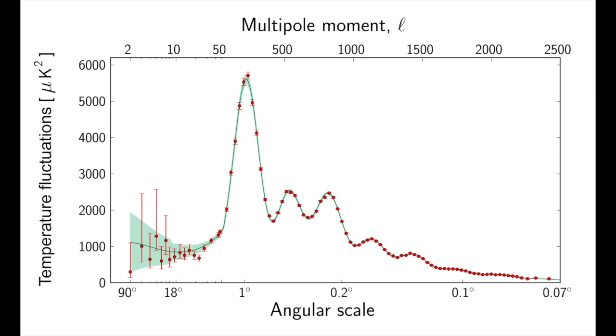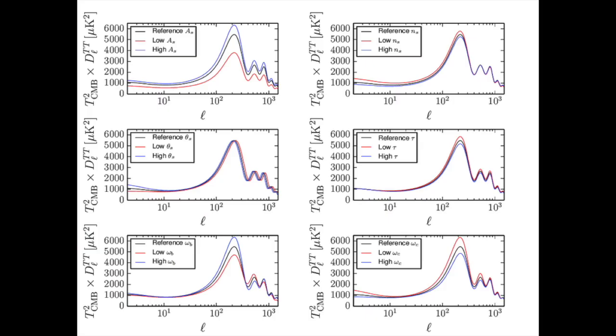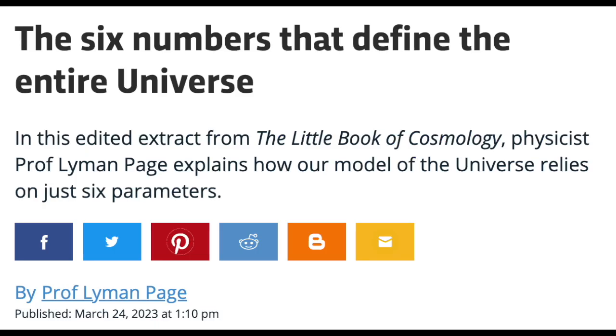But how were cosmologists able to predict this pattern before it was measured? The CMB power spectrum can be constructed mathematically using just six fundamental parameters. If a mathematician was trying to recreate this pattern numerically, it could take dozens of degrees of freedom to replicate. But with just six parameters, cosmologists were able to predict a perfect fit.